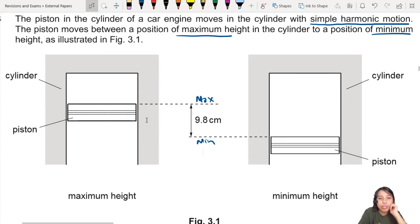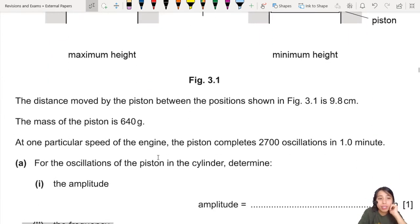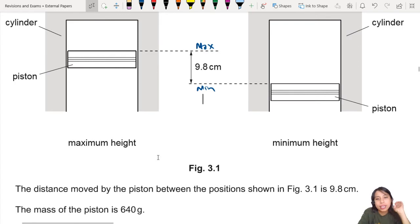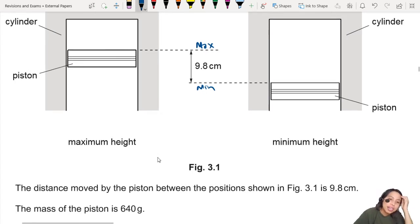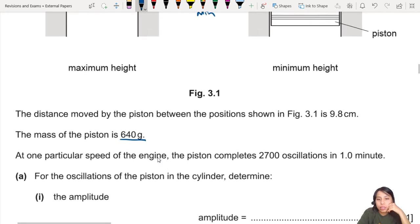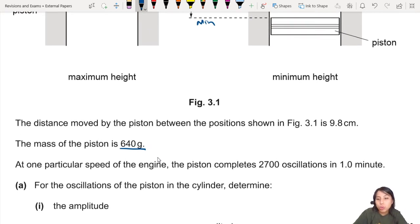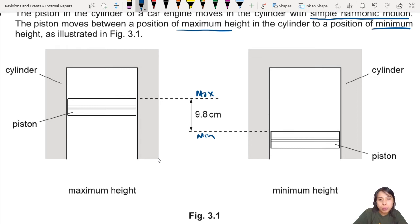The piston moves between a position of maximum height, so I guess this dotted line means the highest it can go, to a position of minimum height, the lowest it can go. So it's doing this little oscillation thanks to ideal gas pressure. The distance moved between the positions is 9.8 cm, they label for us already. Mass is 640 grams. From maximum to minimum position, that is double the amplitude. So this is 2A.